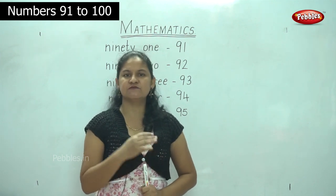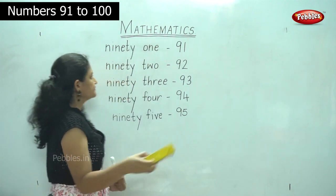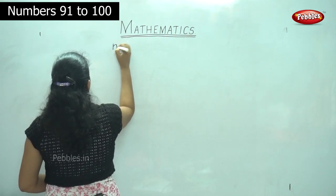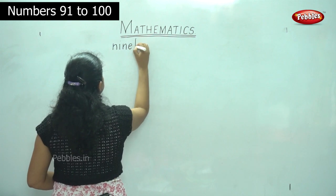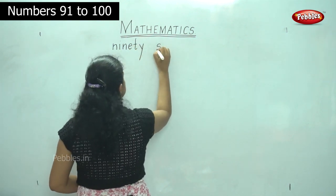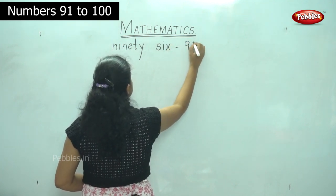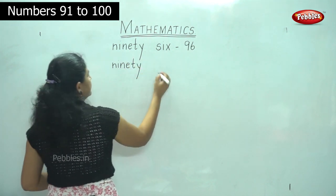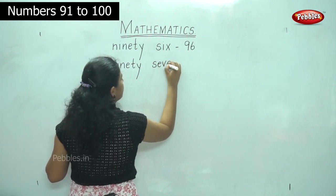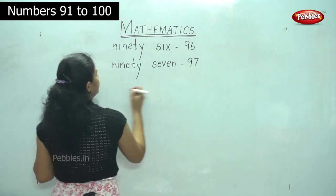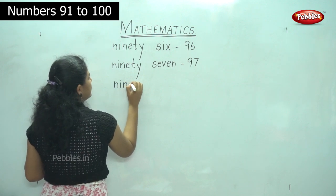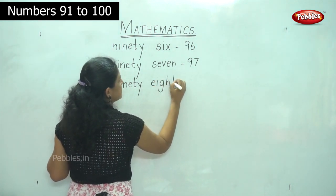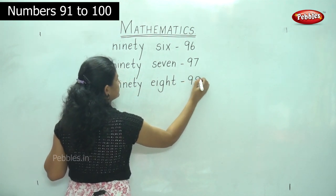We are going to see what are the number names for the next five numbers, that is 96 to 100. We start with 96: N-I-N-E-T-Y, ninety, S-I-X, six — 96. 97: N-I-N-E-T-Y, ninety, S-E-V-E-N, seven — 97. 98: N-I-N-E-T-Y, ninety, E-I-G-H-T, eight — 98.